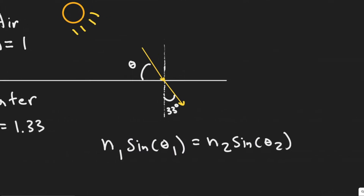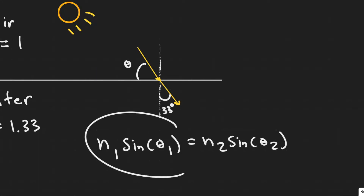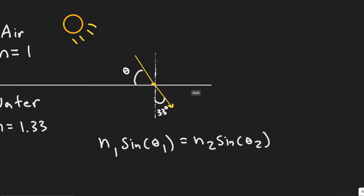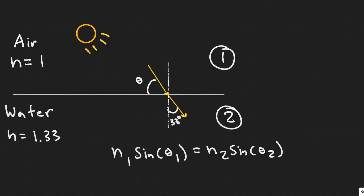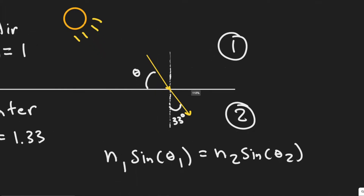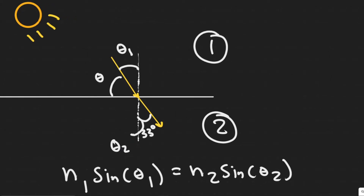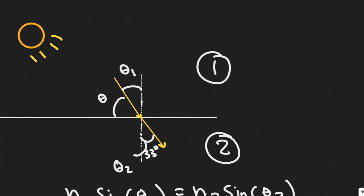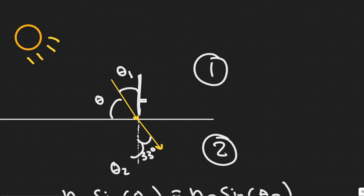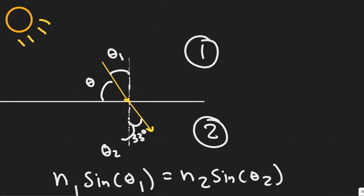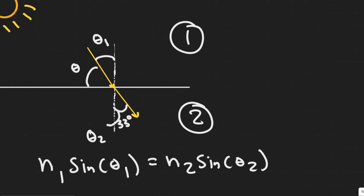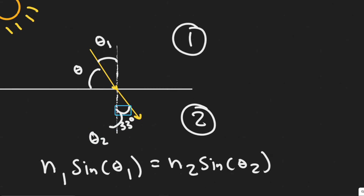Theta 1 and theta 2: scenario 1 is where the light is coming from — in this case air — and scenario 2 is where it's entering, which is water. Theta 1 is the angle of incidence: the angle to the normal that the beam of light makes before entering. Theta 2 is the angle of refraction: the angle the beam makes after entering the water, because it changes direction upon entering a new medium.